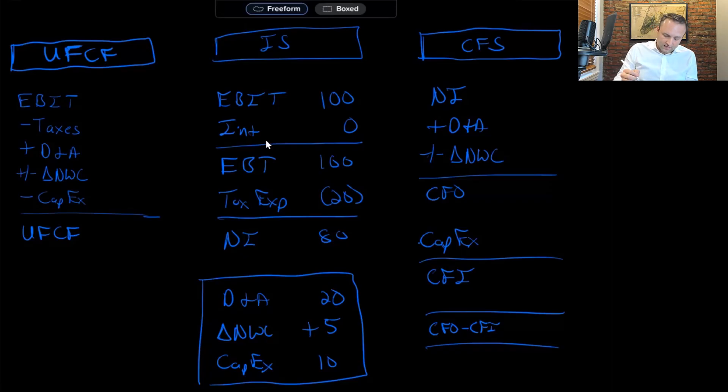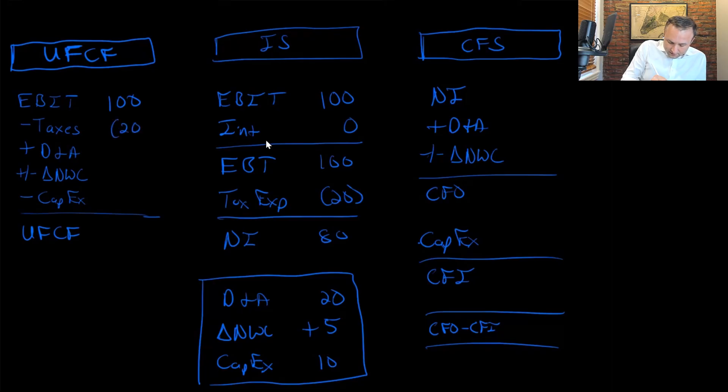Over on the left-hand side here, we're going to work from the EBIT to our unlevered free cash flows. I'm going to start by pulling in the hundred of EBIT on the left-hand side. We're then going to adjust the taxes out as well. So we're moving down the P&L, incorporating our taxes here. We're then going to add back the D&A that's embedded in EBIT up above. So we'll add back the $20 of D&A.